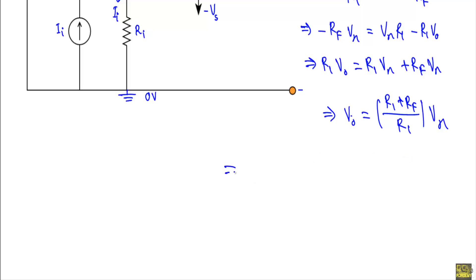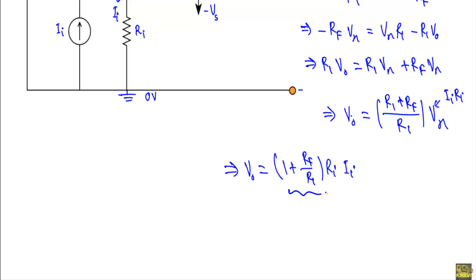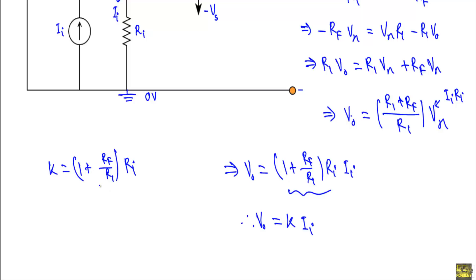Our output voltage VO equals (R1 plus RF over R1) times II·RI. The whole term (1 plus RF over R1) times RI equals constant K times II. So output VO equals K times II, where K equals 1 plus RF over R1, times RI. The unit of K will be Ohm because (1 plus RF/R1) is dimensionless and RI has units of Ohm. This is the non-inverting current-to-voltage converter circuit and this is the output voltage equation.